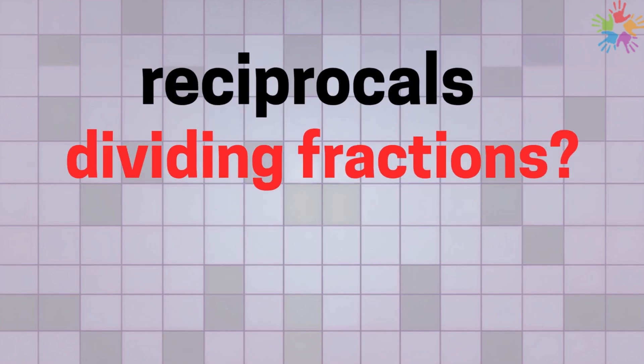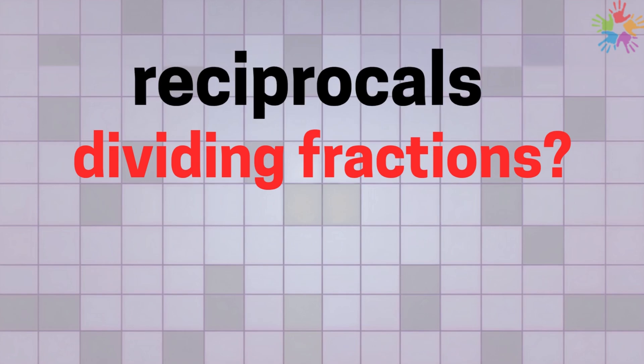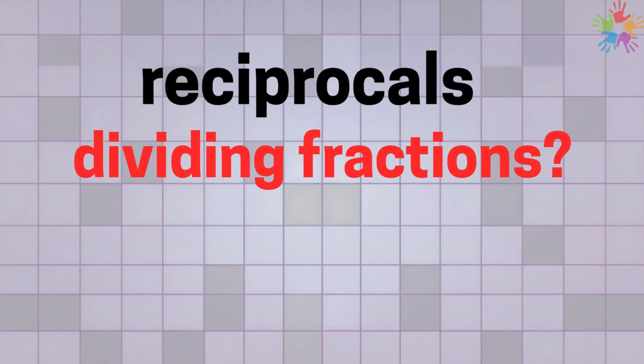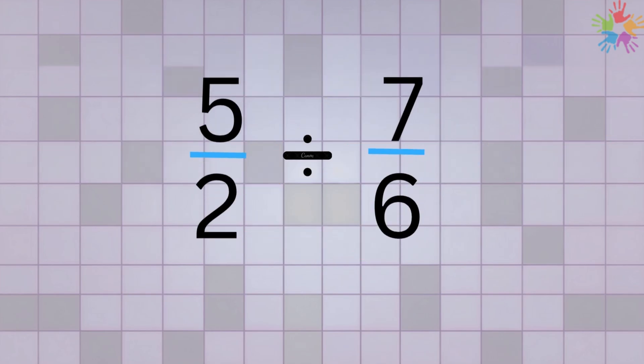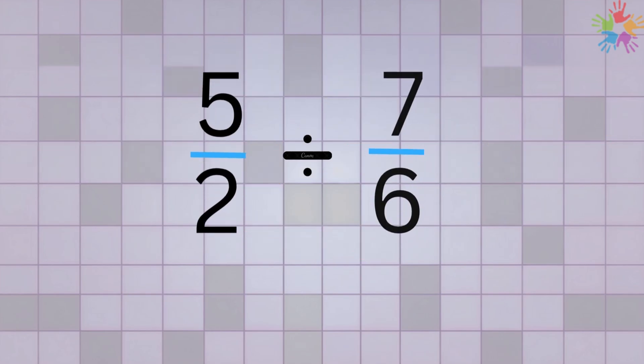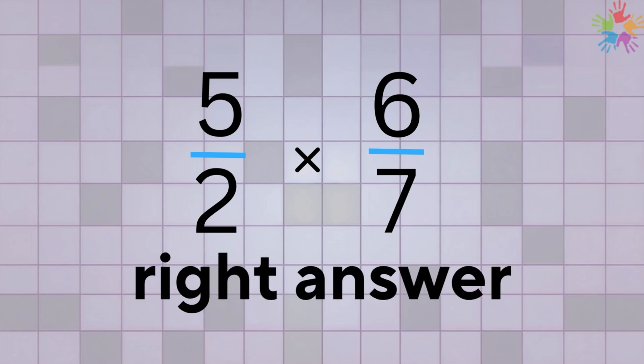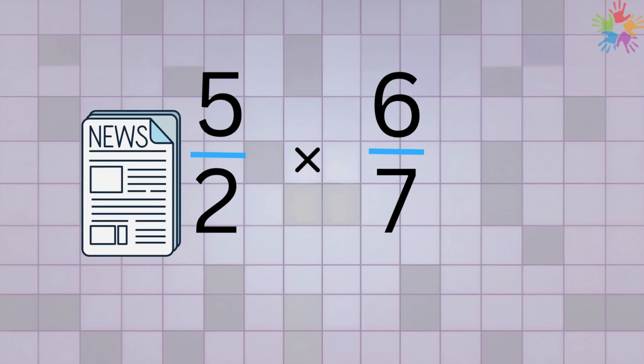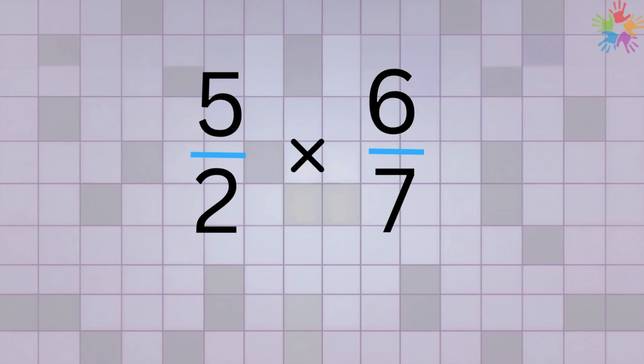Alright, that's pretty cool, but what do reciprocals have to do with dividing fractions? Well, reciprocals help us use a neat trick that makes dividing fractions super easy. Whenever you need to divide by a fraction, you can just flip the fraction and multiply instead. This way, you'll still get the right answer without the extra step, and that's awesome news because multiplying fractions is really straightforward.